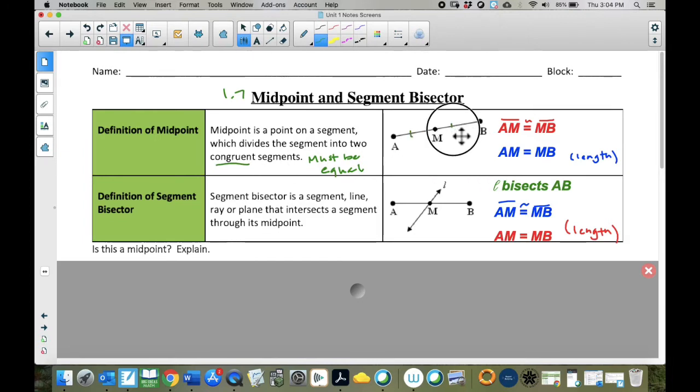Remember that we have a marking that we use for that, it's called congruence. We put a little hash mark on it, and that tells us that AM is congruent to MB. When it has the bar above it, that means segment. When it has the little wavy line above it, that means congruent. So this top one says AM is congruent to MB. The bottom one says AM equals MB. Without the bar and without the squiggle, that is an equal sign, and we're talking about the length.